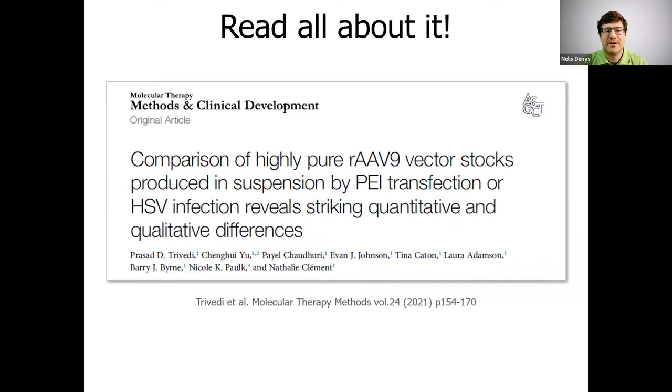Stunner has been helping a lot of companies with their AAVs, and to visualize that a bit as well, you can read all about it in this recent publication from Trivity et al. They are comparing AAV samples from different production methods, either by PEI transfection or with herpes simplex virus infection, and using Stunner as one of the analytical techniques.